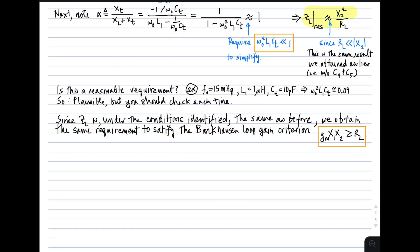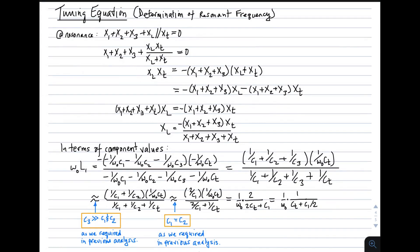Now since Z sub L at resonance is the same as before, we obtain the same requirement to satisfy the Barkhausen gain criterion that was derived in the previous lecture, video, and notes. Namely, that the transconductance times X1 times X2 should be much greater than the series resistance of the inductor. So again, under this simplification, we obtain this criterion for meeting the Barkhausen gain criterion.